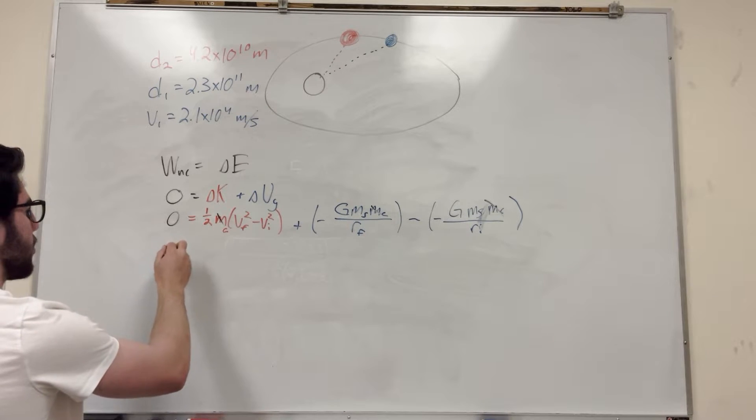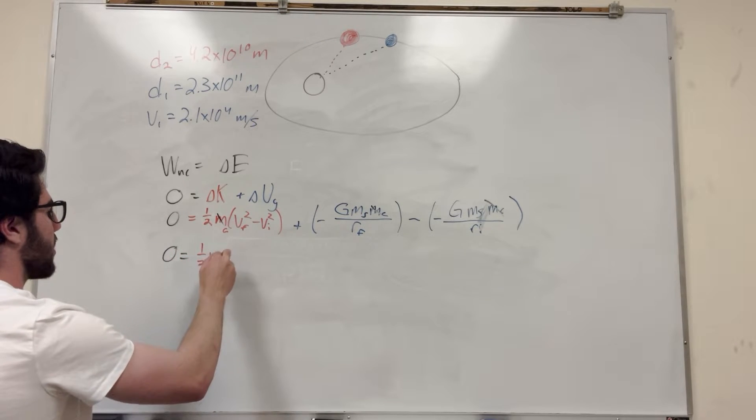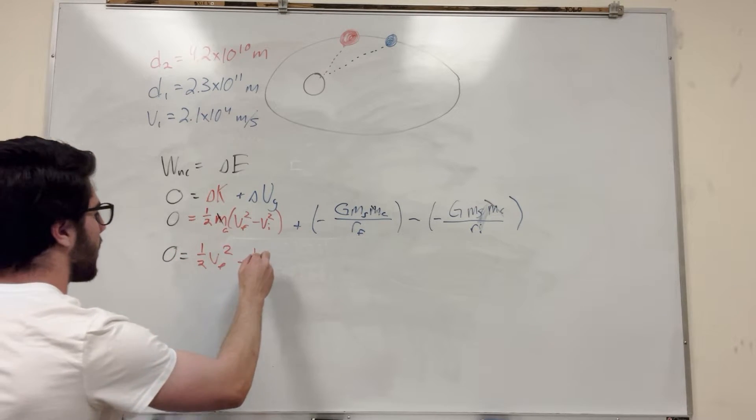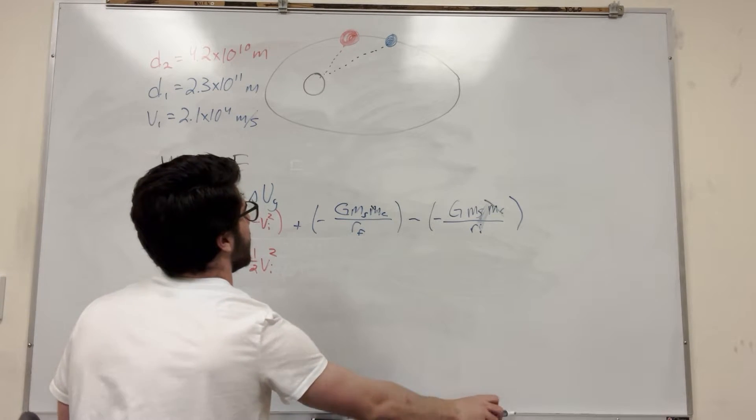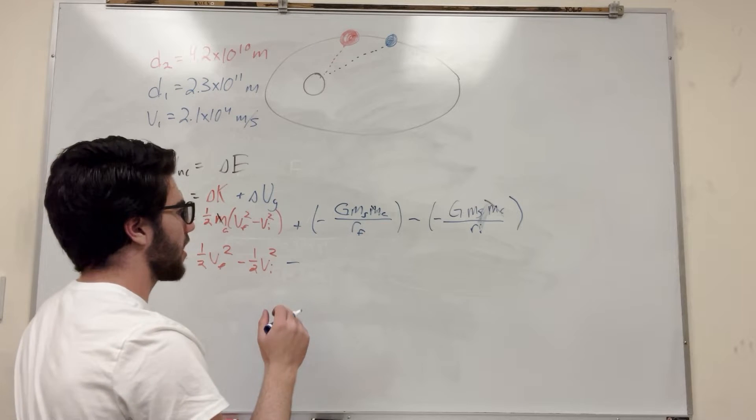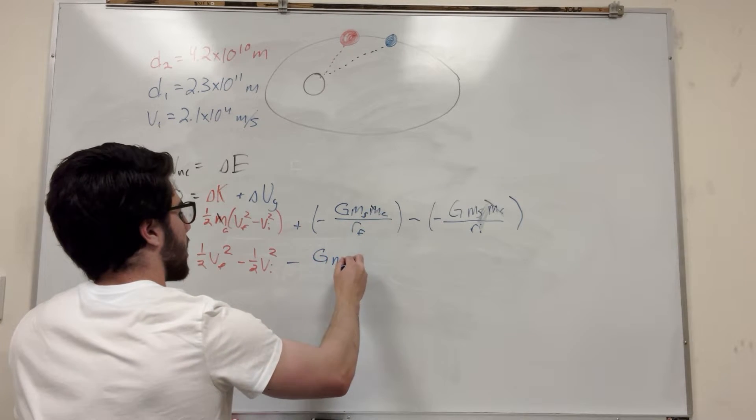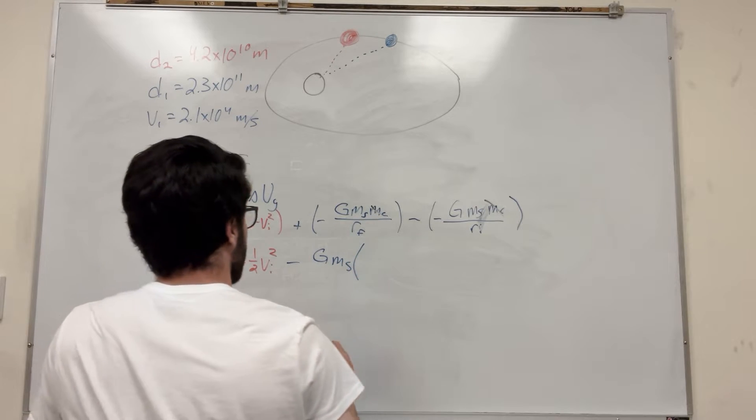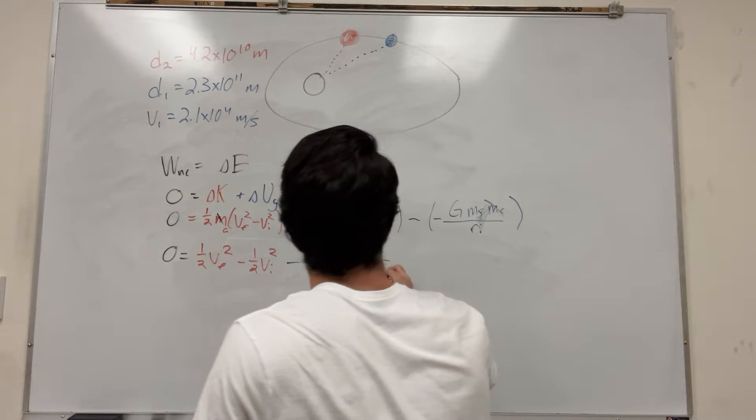So let's look at how this will look even further. So I'm going to expand this out some more because we want velocity final. This is what we're trying to find. So it's going to be one-half velocity final squared minus one-half velocity initial squared. And so it's going to be minus. And then we can factor out a lot of these so that G can come out. And then the mass of the sun can come out. And then it's just going to be one over radius final.